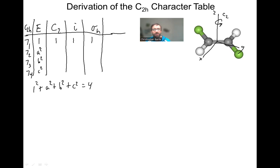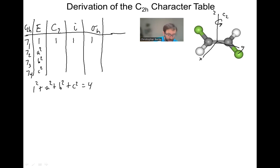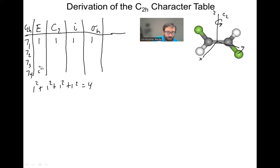The sum of the squares of the dimensionalities — that is, the character underneath the identity — is going to equal the order of the point group, which is the number of operations. So one squared plus a squared plus b squared plus c squared equals four, because we have four symmetry operations. These dimensionalities have to be one, two, three, four, or five, and for most character tables it's going to be ones or twos. The only way this equation works is if a, b, and c all equal one: one squared plus one squared plus one squared plus one squared equals four.